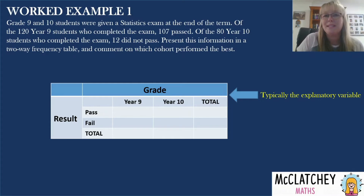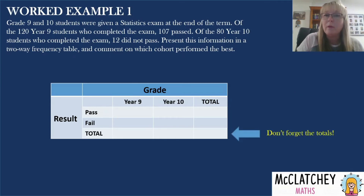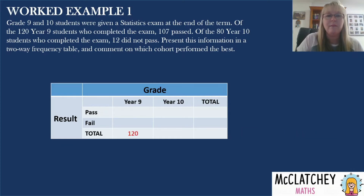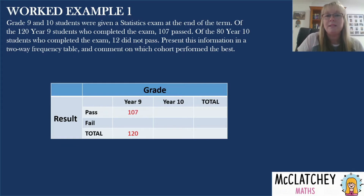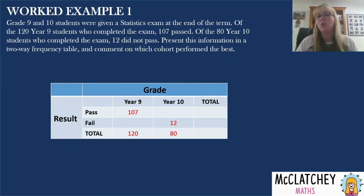Now it's time to put information into the table. Make sure you've got columns on the end and down the bottom for totals — don't forget these. We've got 120 Year 9 students in total, so that goes in the totals column, and we know that 107 passed, so we pop that into the table. We've also got 80 Year 10 students in total and 12 did not pass. I always like to put in the information given in the question first, then work everything else out from there.